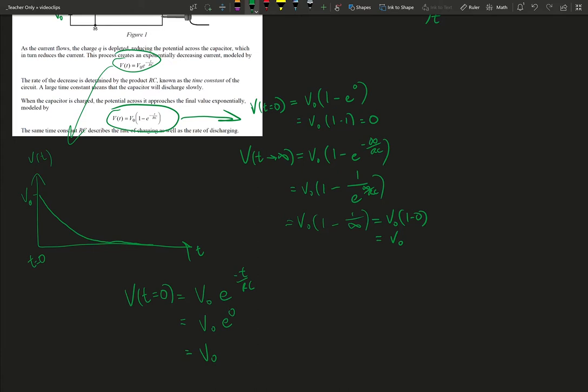As t goes to infinity, or a really long time after we've opened the switch, we get the same thing. V0 e to the minus, again, I'm just going to write infinity, but we're going to assume that just means a really big number, a long time period has elapsed, over RC,